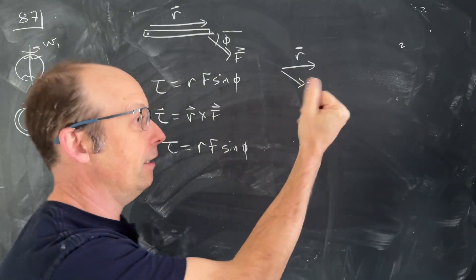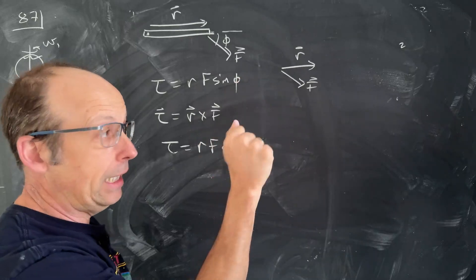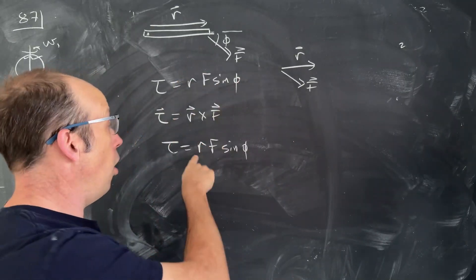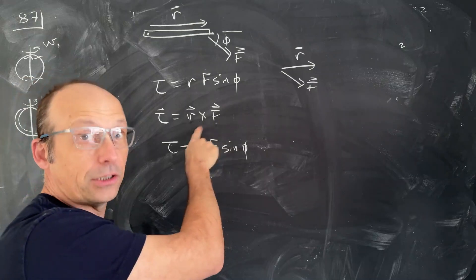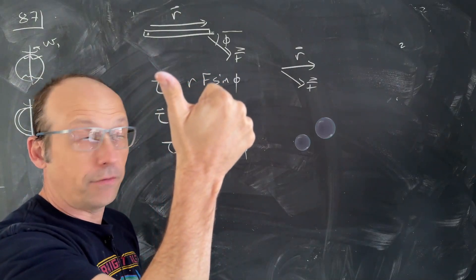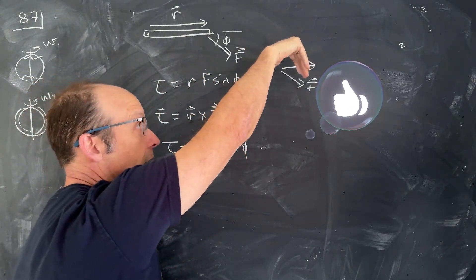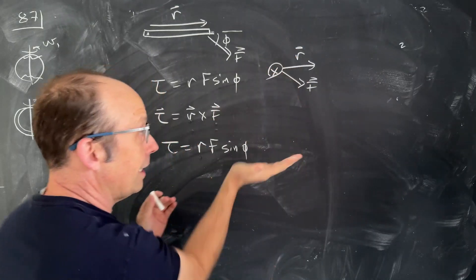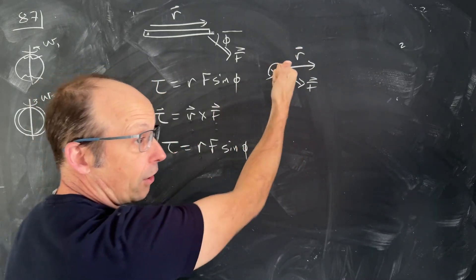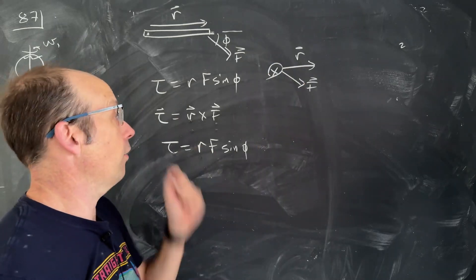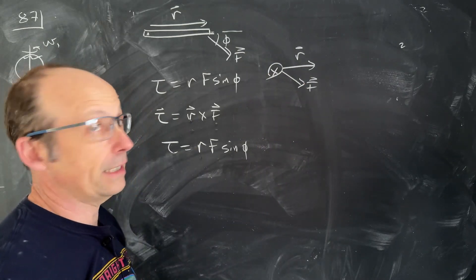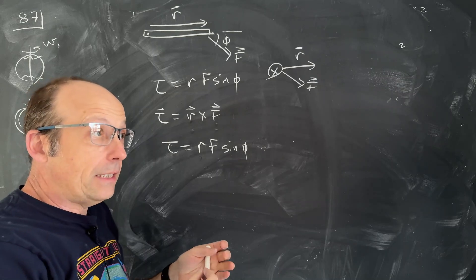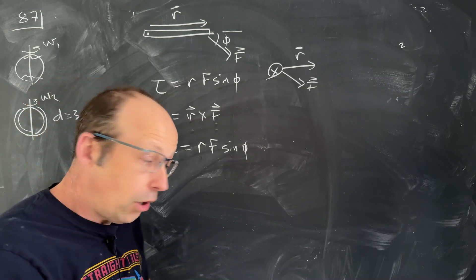To choose the correct direction, we use the right-hand rule. Take your right hand, curl your fingers from r through F — the order matters. Your thumb gives the direction of the torque vector. If you curl from F through r instead, that's not r cross F. So torque is a vector, which means angular momentum is also a vector.